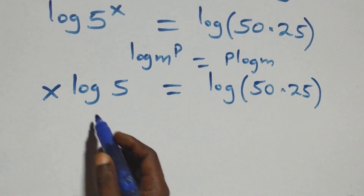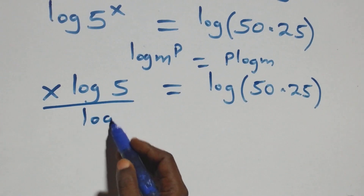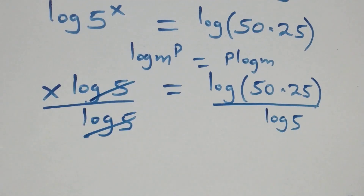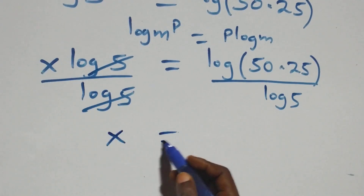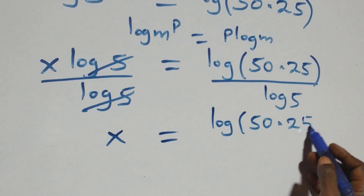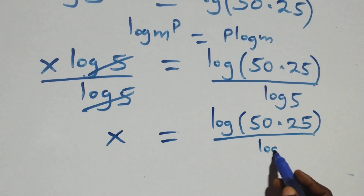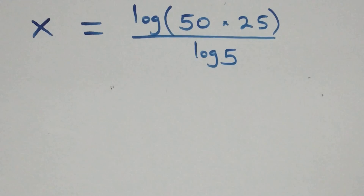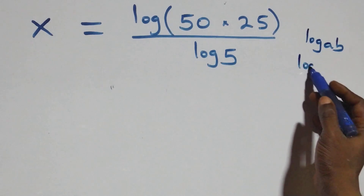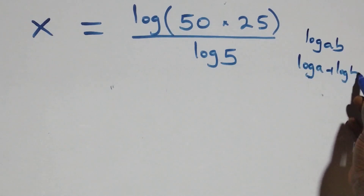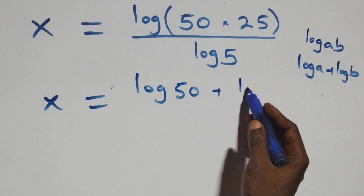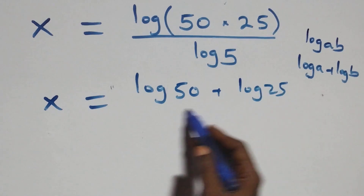The next step is to divide both sides by log 5. Log 5 cancels on the left, and we have x equals log(50 × 25) over log 5. This follows from the product rule of logarithms: log(a × b) equals log a plus log b. So x equals (log 50 plus log 25) over log 5.